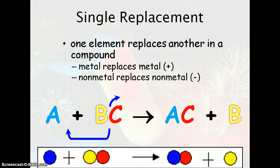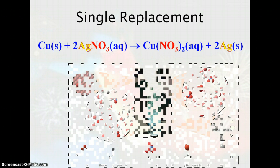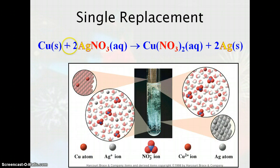You get one person coming in and kicking the other one out. Here's an example: you have copper and silver nitrate, and the copper comes in and kicks the silver out, and now it's copper nitrate and the silver is by itself.